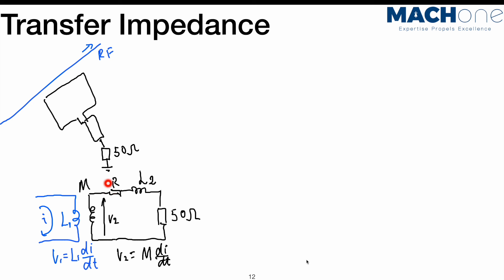Ignoring the small resistance for now, this LR combination acts like a filter — an LR filter. The voltage you see on the oscilloscope is the voltage developed across the 50-ohm impedance. You can treat this circuit as a potential divider of V2. So using a small loop to measure the RF signal, what you measure is a voltage waveform — a smaller version of V1 divided by the LR impedance.